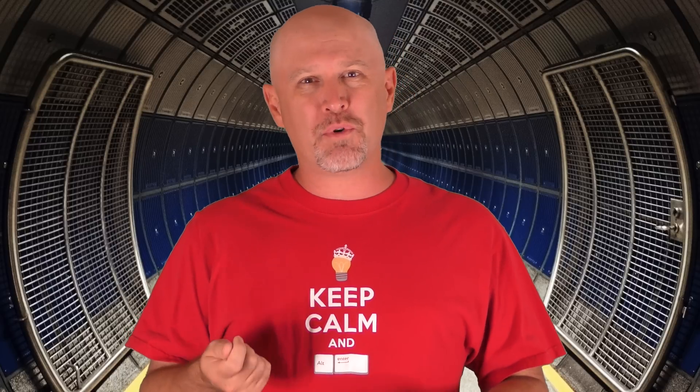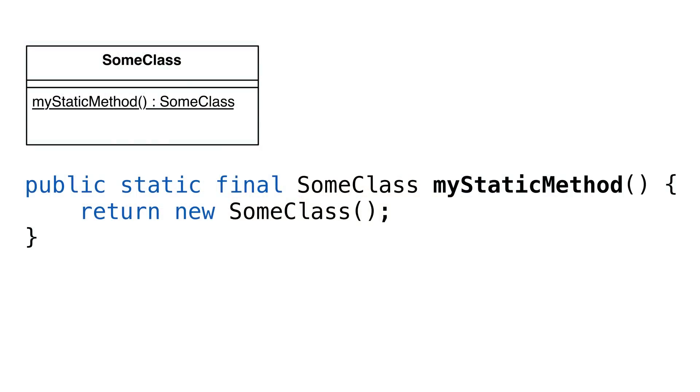We could use a builder pattern, but that seems overkill for two parameters. Let's take a look at a new pattern in Java called static factory. The static factory is a simple variation of the factory method pattern. The static factory method is simply a static method that returns an instance of a class.